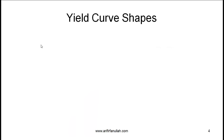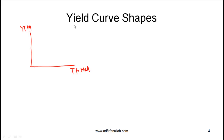Now, what are some common yield curve shapes? The shape we just saw is called a normal or upward sloping yield curve. The x-axis is time to maturity and the y-axis is yield to maturity. A way to remember what's on the y-axis: the name of the curve typically contains what is on the y-axis — it's called a yield curve, so the y-axis is the yield, specifically yield to maturity. When bonds that mature after a longer time have a higher yield to maturity, this is called an upward sloping or normal yield curve. Currently in the US we have a normal yield curve.